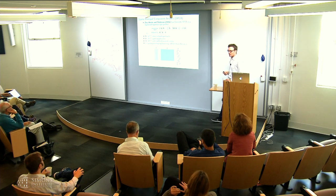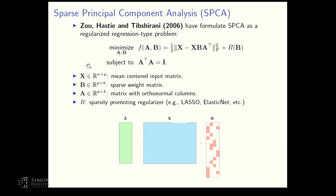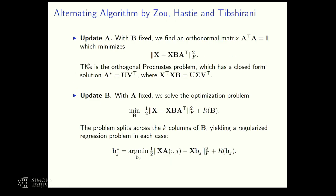This is a highly non-convex problem, but we can use an alternating algorithm to find a stationary point. We fix B and update A — this involves an orthogonal Procrustes problem with a closed-form solution, requiring just an SVD. Then we fix A and update B by solving K regularized regression problems using a coordinate descent algorithm or LARS.